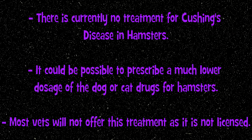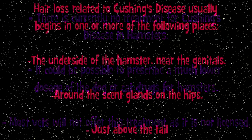There is currently no treatment for Cushing's disease in hamsters, unlike in cats and dogs where medication can help manage the illness. It could be possible to prescribe a much lower dosage of these drugs for hamsters, but most vets will not offer this treatment as it is not licensed.